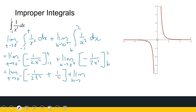Plus the limit as b approaches 0 from the positive side of minus 1 over 2 times 4 — so that's minus 1 over 8 — minus, if I substitute b in there, 1 over 2b squared. Now both these limits: we have a denominator that tends towards 0, which means the whole number is tending towards infinity, or negative infinity in this case. The denominator gets very, very small, so the whole number gets very, very big, tending to a big value.